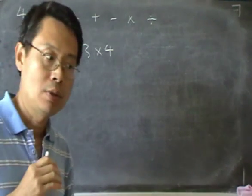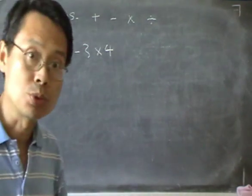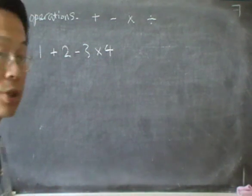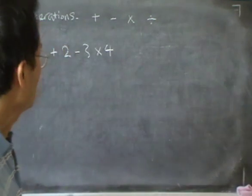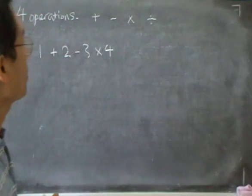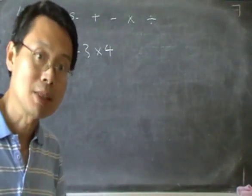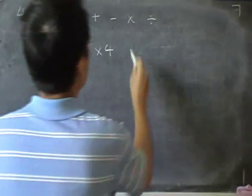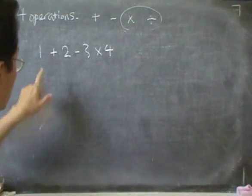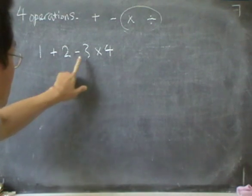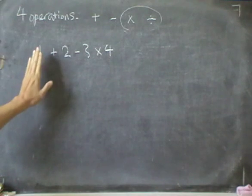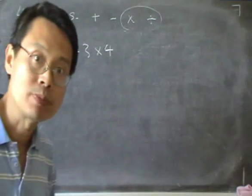Now, there's some rules we need to follow when we use these operations. The rule is that if you have a number of different operations in the sum, you must do the times and divide first. So if you look at this, you have plus, minus and times in there. We must not do it in the order that you see.